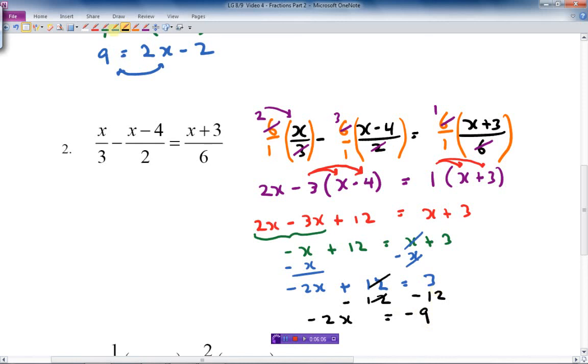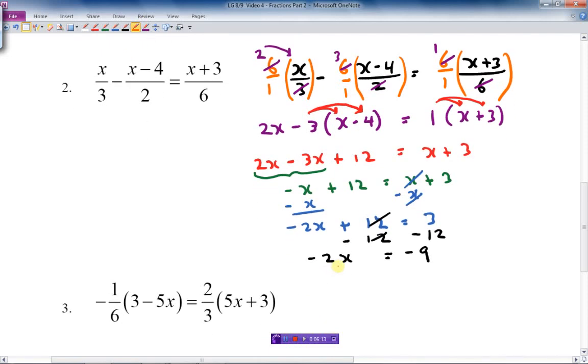And the last thing I want to do here is divide. Let's just move this a little bit. Divide by negative 2. And it cancels out here. And I get x equals positive 9 over 2 or 4 and a half. If you like to do it that way.